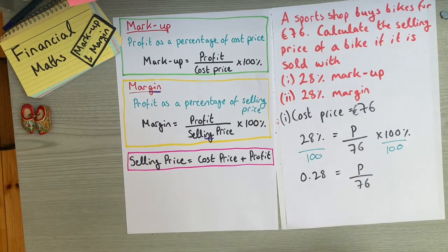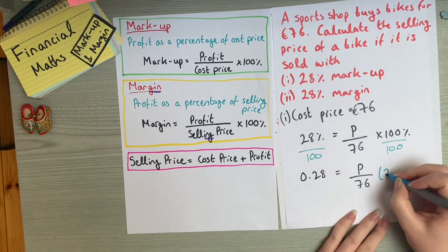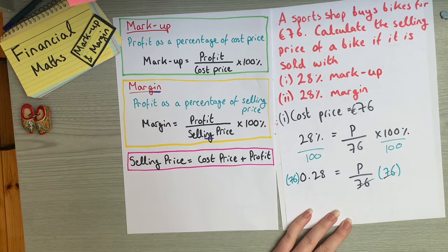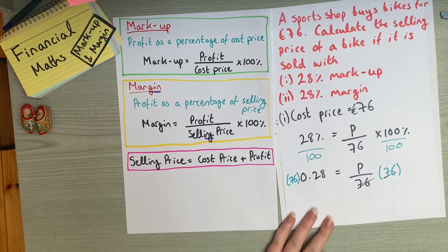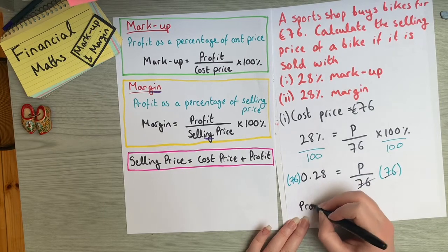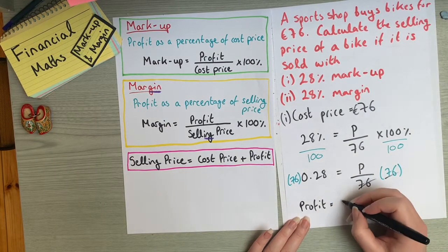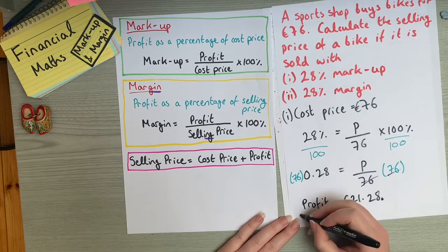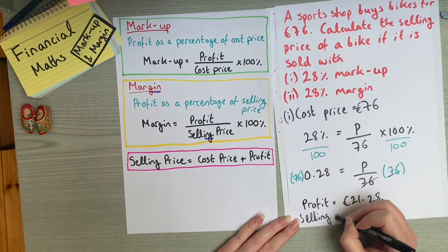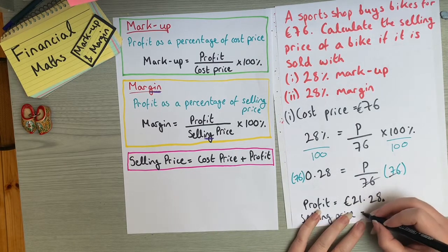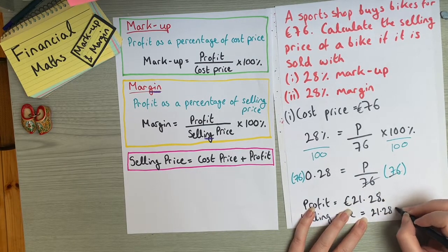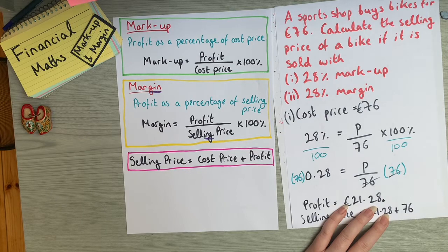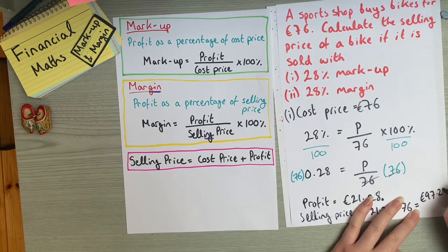Multiplying both sides by 76 to isolate the profit: P = 76 × 0.28 = €21.28. So the selling price is cost price plus profit: €21.28 + €76 = €97.28. That's the selling price for part one.